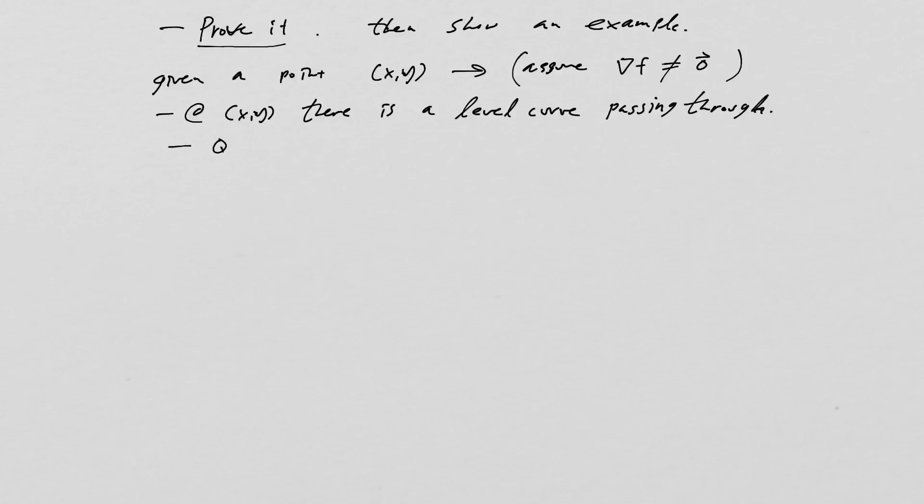So we also have to assume that at x,y there is a level curve passing through. So the question, then, is we have to find it. We need to find the tangent vector, and we'll call that vector u that points in the tangent direction of the level curve.